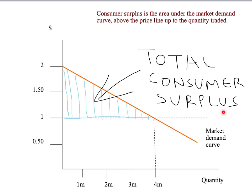More generally, to get consumer surplus in a market, look at the area under the market demand curve, above the price line, up to the quantity traded. That rule will work whenever we have price-taking consumers in the market. A key point to note, however, is that we have now used our dollar-is-a-dollar assumption.